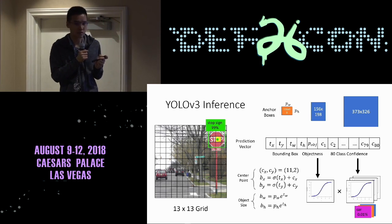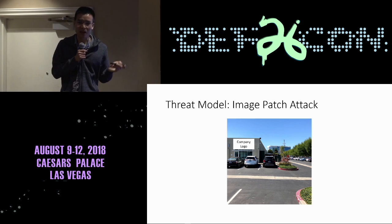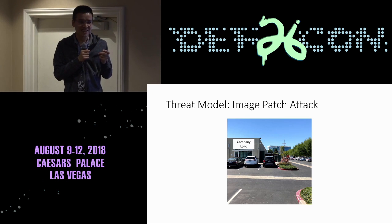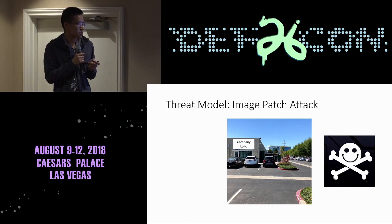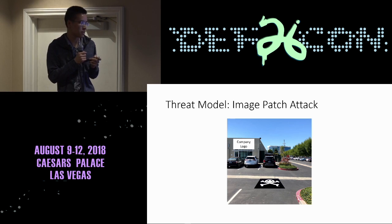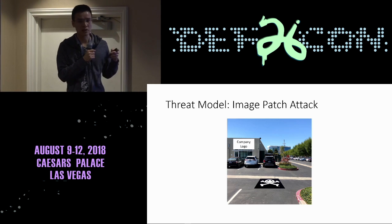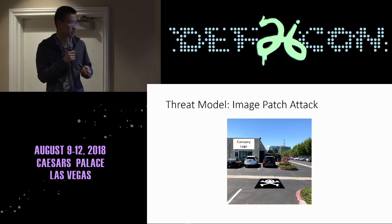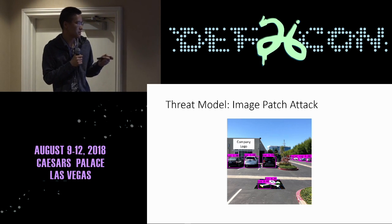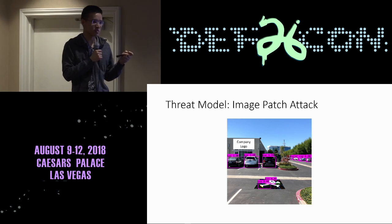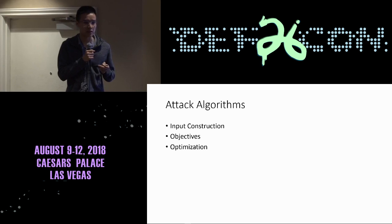Let me introduce our threat model. It's different from many adversarial machine learning works because we don't assume that the perturbation we add is invisible to human eyes. In our threat model, we can put any image patch on the surface of any objects in our scene — in this case, on the floor because it's more visible to our camera. The perturbations are calculated by our algorithm and would be interpreted differently to human vision.